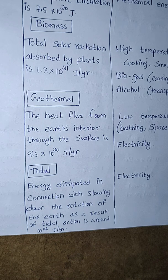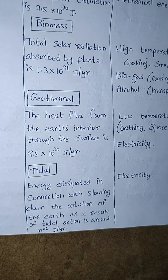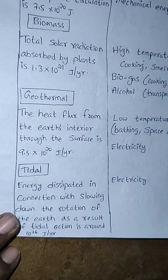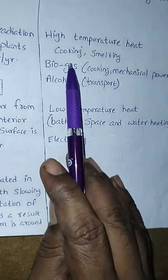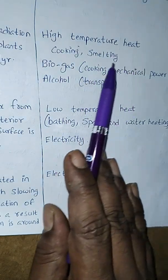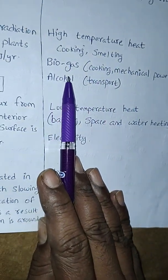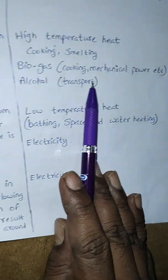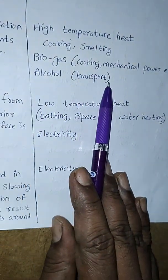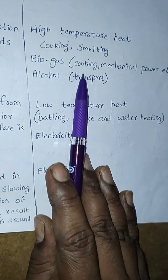Next is biomass. Whatever wastage we get from natural resources — vegetable wastage, animal dung such as cow dung and buffalo dung — is decomposed to produce biomass. Applications include high temperature heat, cooking, smelting, biogas for cooking, mechanical power, and alcohol for transport.